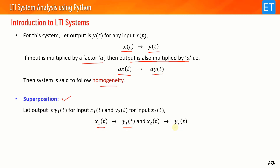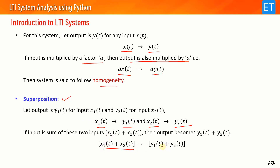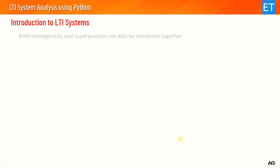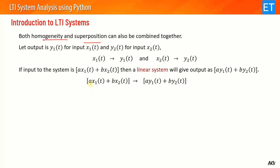For superposition: if I get output y1 for input x1, and output y2 for input x2, and if I add these two inputs x1 and x2 and give them to the system, then if my system is linear I will get y1 plus y2. I can combine both homogeneity and superposition: if I give input a·x1 plus b·x2 to the system, then the linear system will give output a·y1 plus b·y2, combining both homogeneity and additivity.